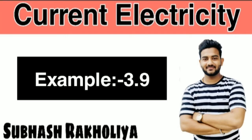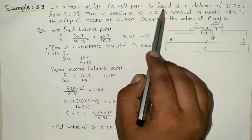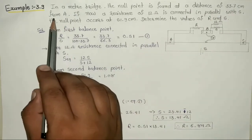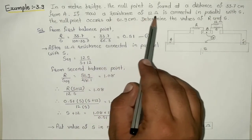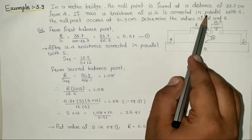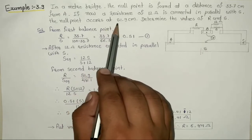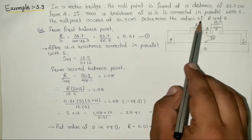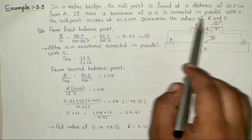Example number 3.9. The question is: in a meter bridge, the null point is found at a distance of 33.7 cm from A. If now a resistance of 12 ohm is connected in parallel with S, the null point occurred at 51.9 cm. Determine the value of R and S.